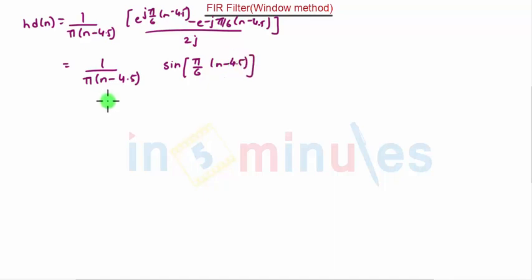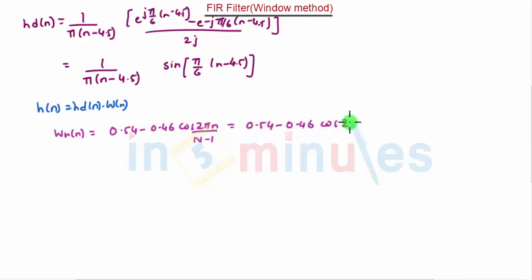Now, we have to calculate H of n. H of n is given by HD of n into W of n. We are using Hamming window function. Hamming window function is given as W of n equals 0.54 minus 0.46 cos of 2 pi n upon capital N minus 1. That is 0.54 minus 0.46 cos of 2 pi n divided by 9.